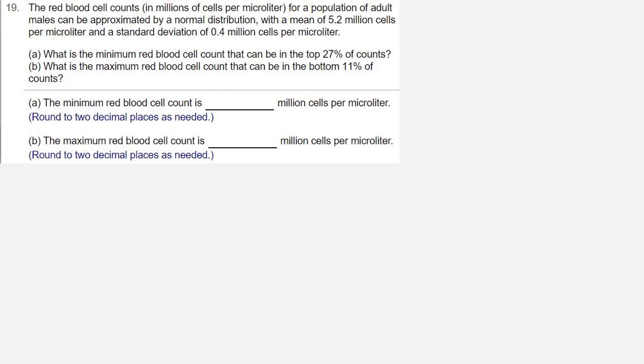Part a: What is the minimum red blood cell count that can be in the top 27% of counts? Part b: What is the maximum red blood cell count that can be in the bottom 11% of counts? Start with part a.